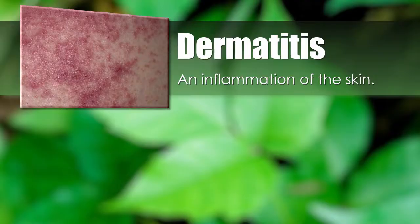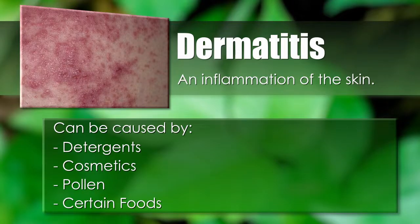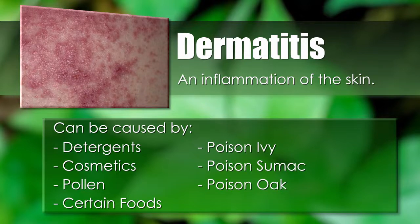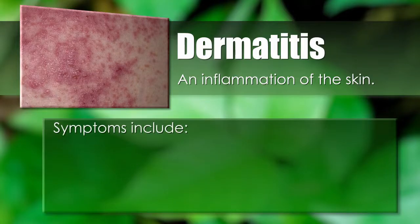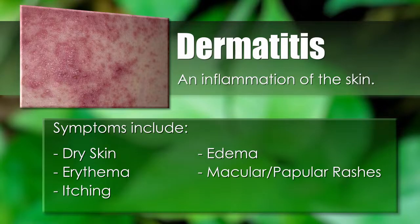Dermatitis is an inflammation of the skin and can be caused by exposure to detergents, cosmetics, pollen, certain foods, or contact with poison ivy, poison sumac, or poison oak. Symptoms include dry skin, erythema, itching, edema, macular itching, vesicles, crusts, and scaling.